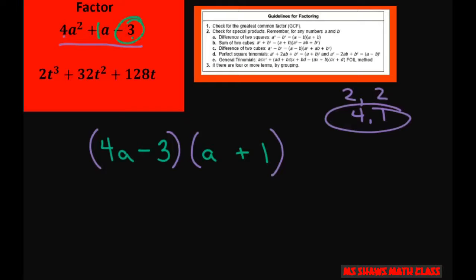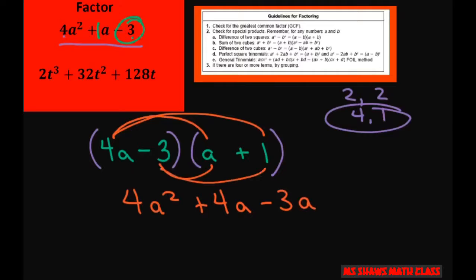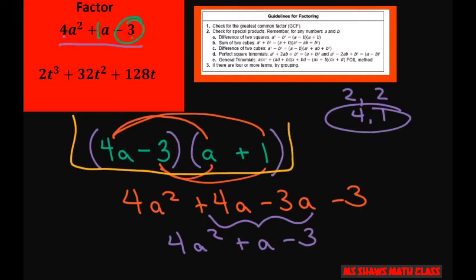Now let's just double check to see if we did this right because this one's a little harder than the others. 4a times a is 4a². 4a times 1 is 4a. Negative 3a is going to be minus 3a. Then we have minus 3. You always have to add these two middle terms, so you get 4a² + a - 3. So this is correct. We got back to our original answer.